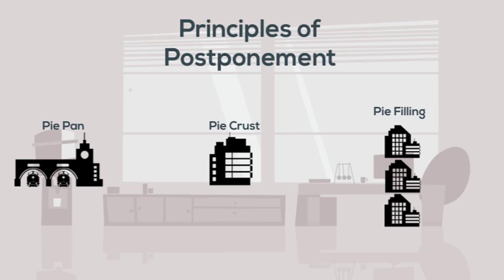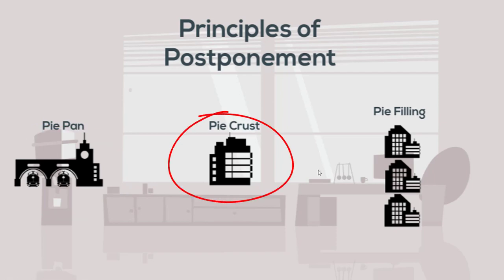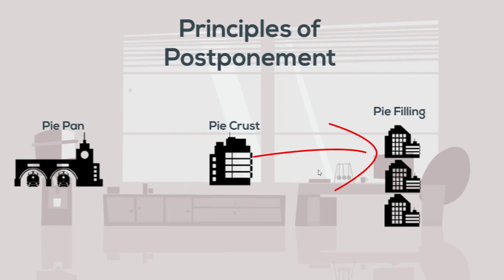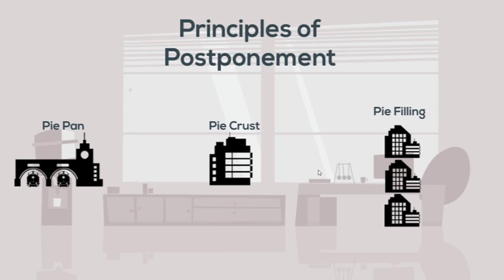When we deal with principles of postponement, we deal with designing modularity into the supply chain so that a node within the system will be able to create enough product to handle more than one product line. For example, with three types of pie, we can make one pie pan that will fit all three types, then one pie crust usable for all different types of pies, and then send the pie crust to different locations to have the pie filling added. Generally, we increase the modularity so that various elements within the supply chain can handle more than one type of product.